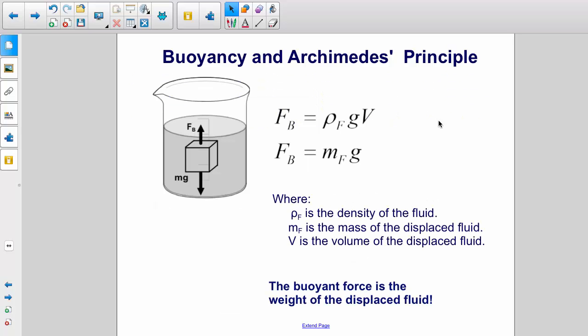So let's summarize the idea of buoyancy and Archimedes principle. The buoyant force is the density of the fluid times g times the volume of the fluid displaced by an object.